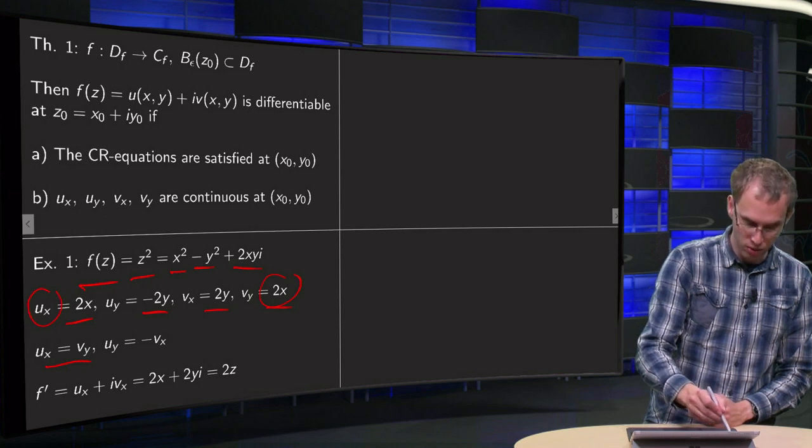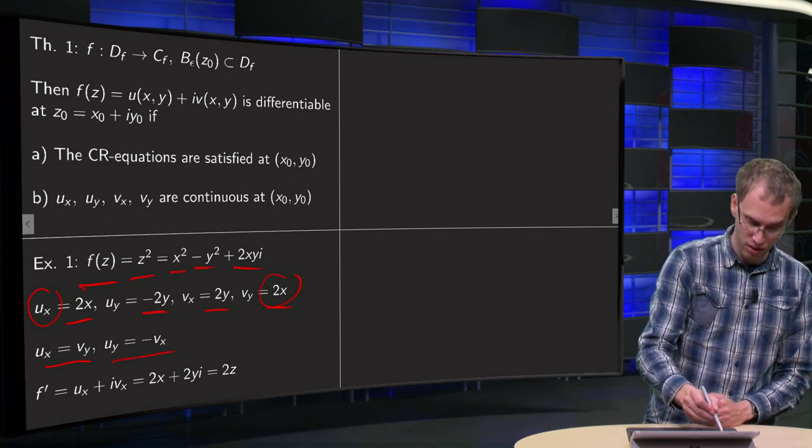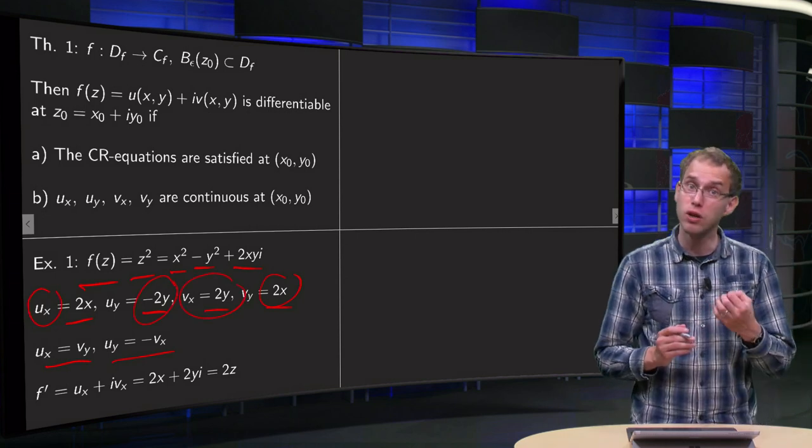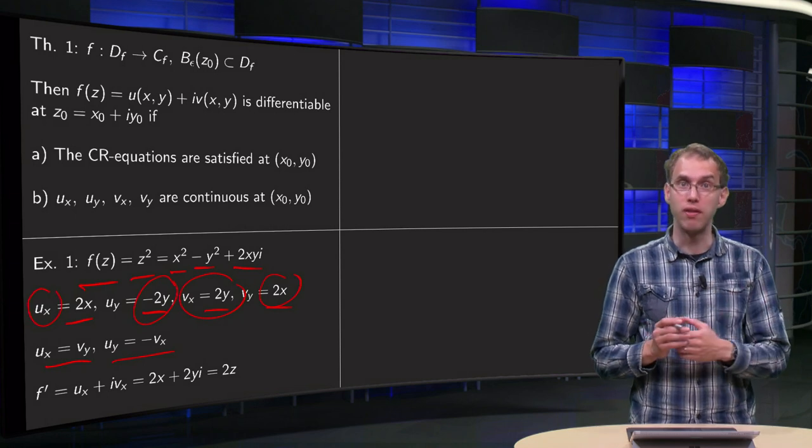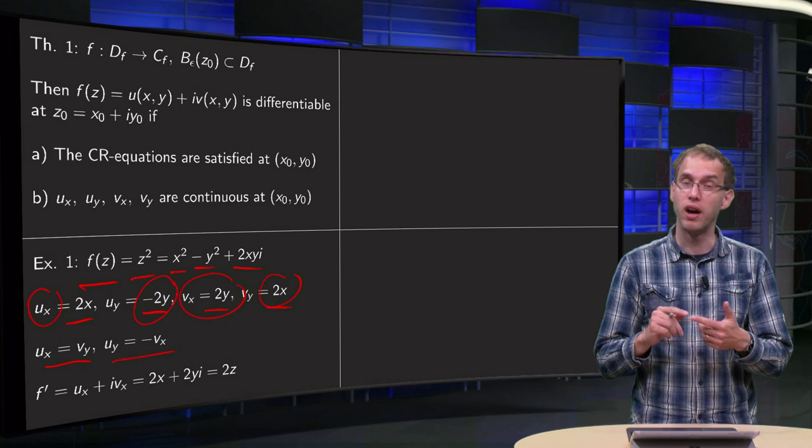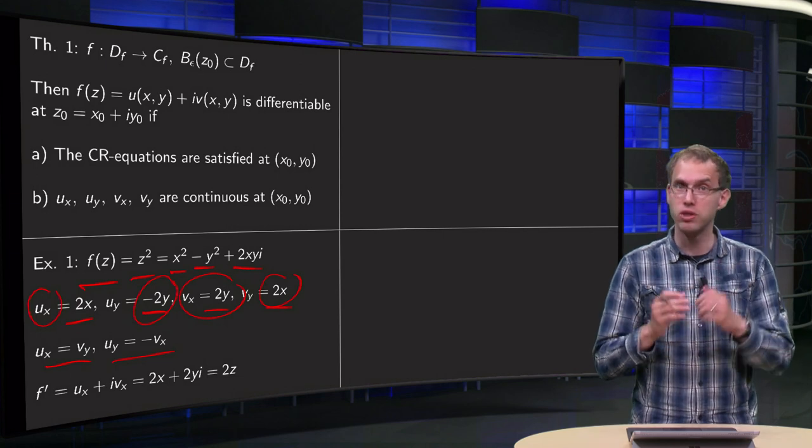And we need uy to be equal to minus vx. uy equals minus 2y, vx equals 2y, so indeed uy equals minus vx. So we know that f is differentiable, because also the ux, uy, etc., they are all nice and continuous.